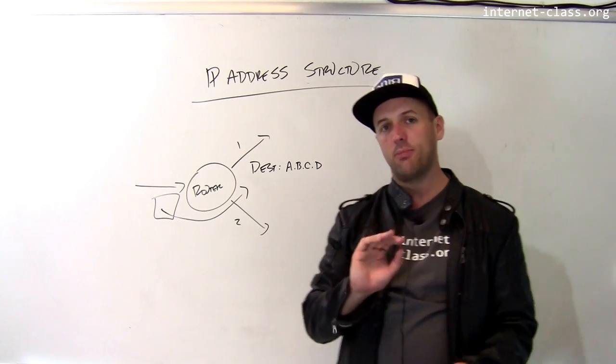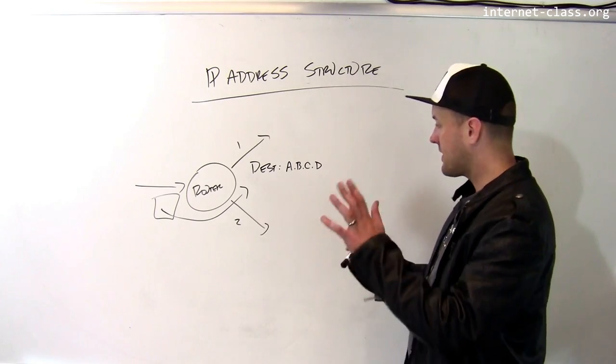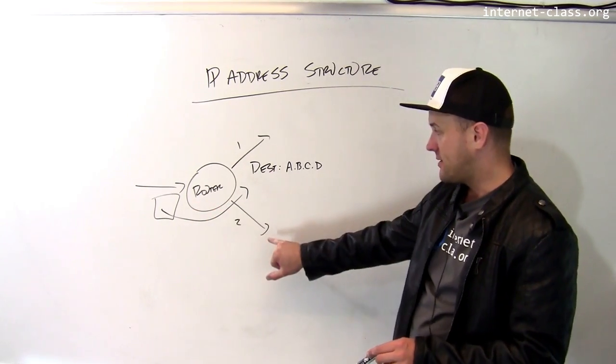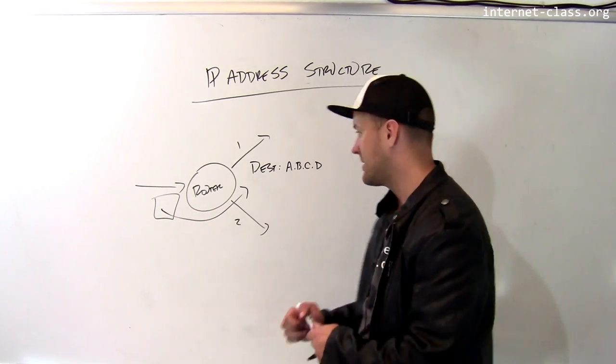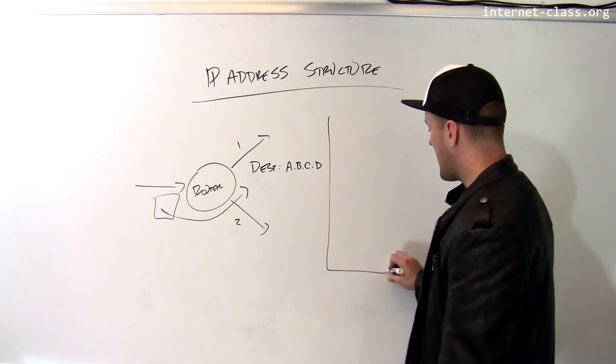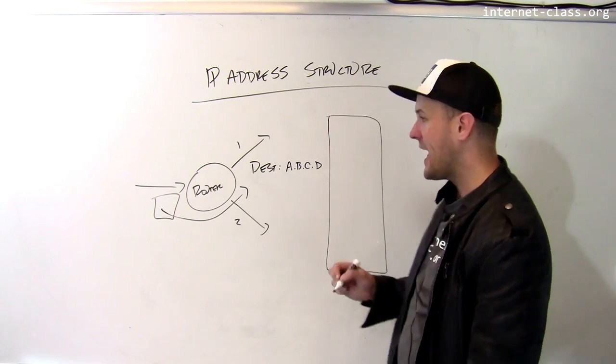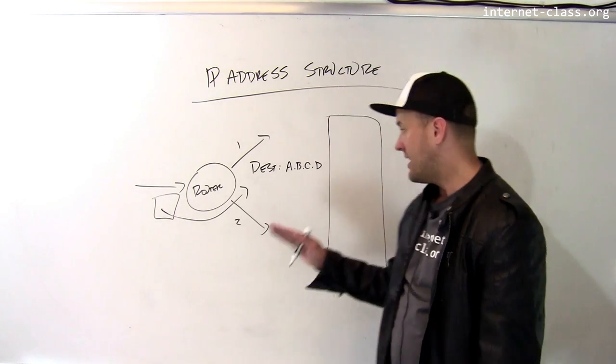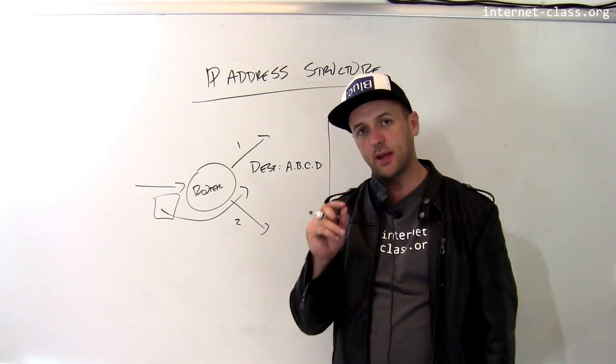But they need help from the IP address. So let's think about how this is going to work. This router, in order to make this decision, is going to maintain a table. This is called a routing table. This routing table is going to have some number of entries in it. And it turns out that the number of entries in this routing table is really important.